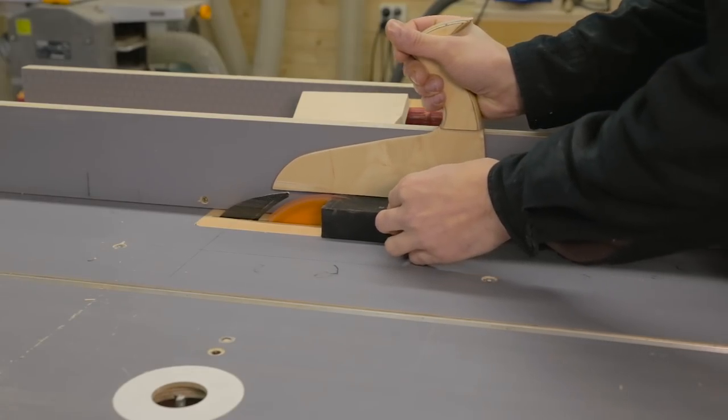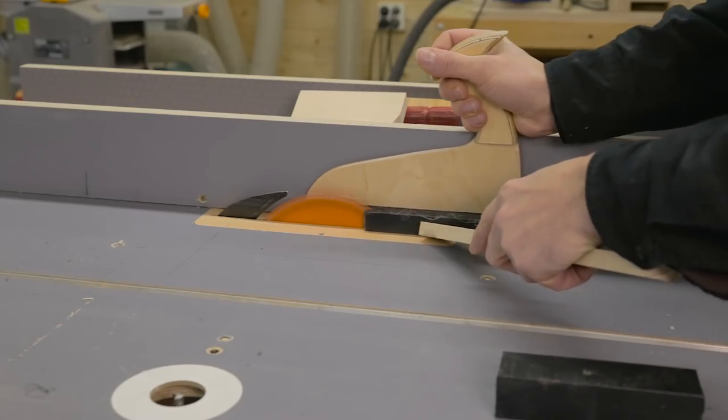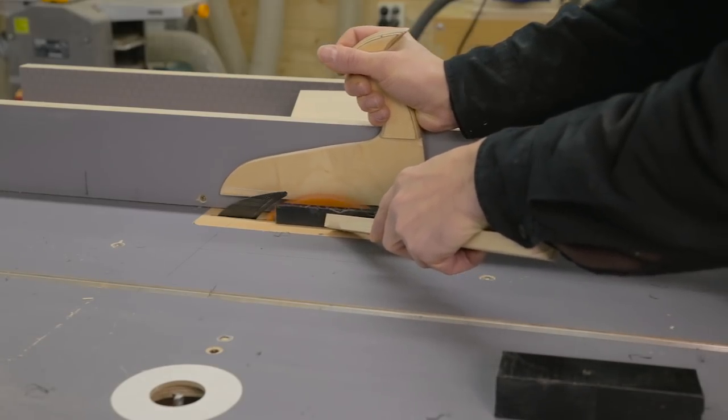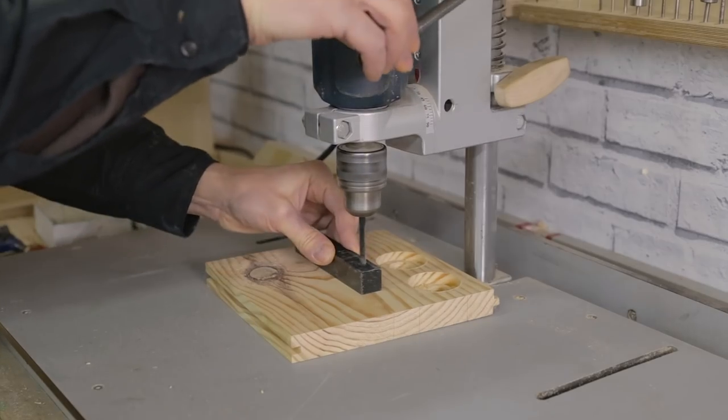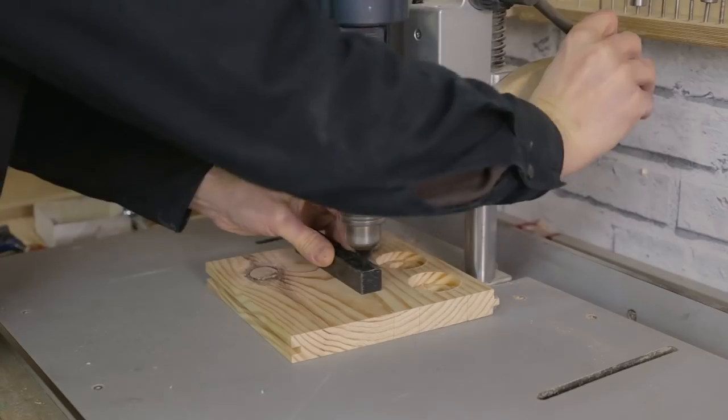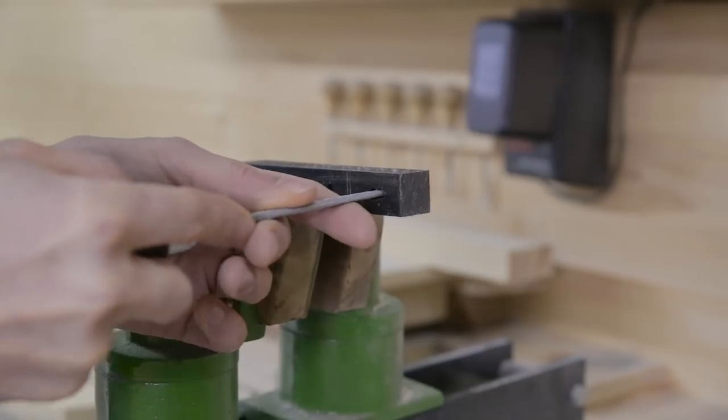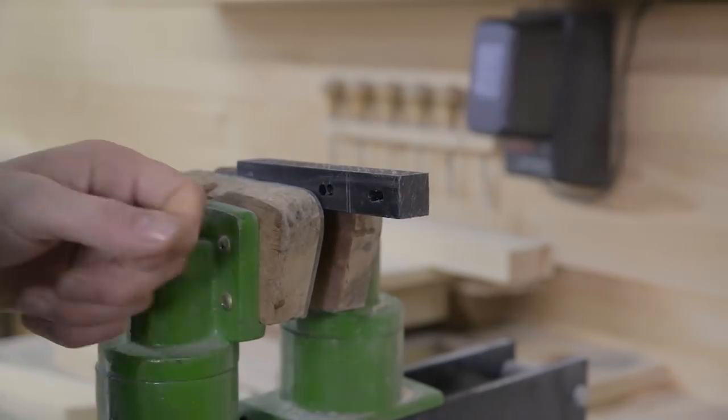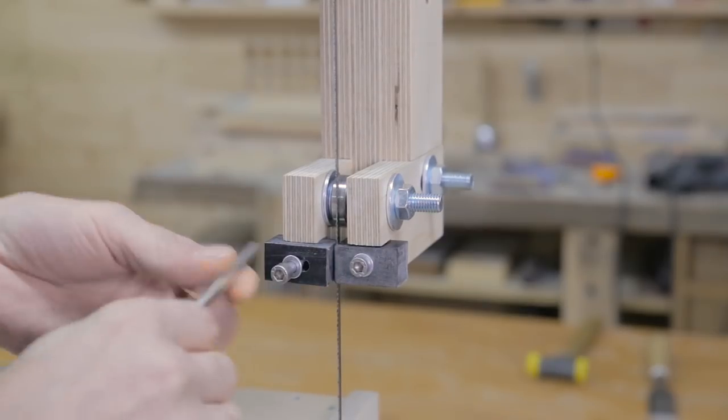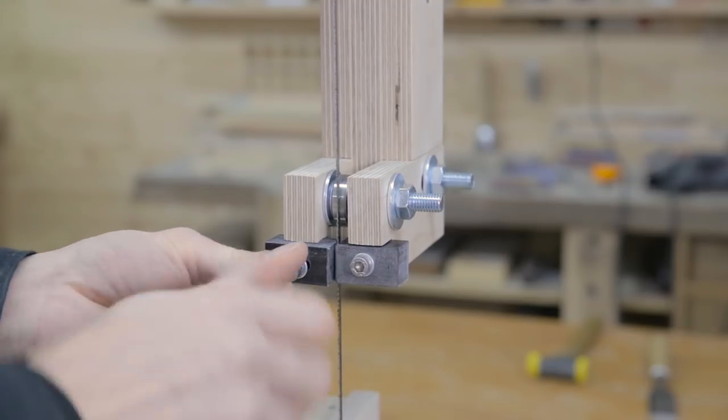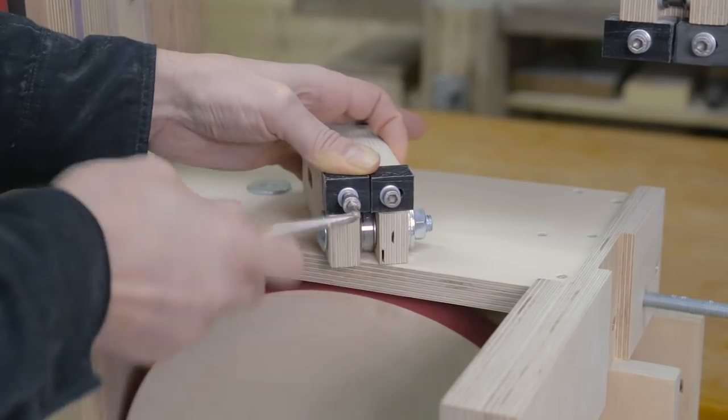I'll use this piece of Teflon I had lying around in the shop to make the side stops. This material boasts a very low friction coefficient, which makes it perfect for the job. Now I can put them in the saw's guide, both the upper one and the lower one.